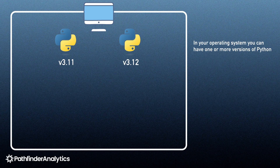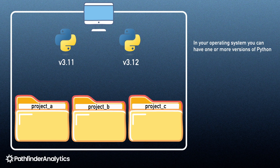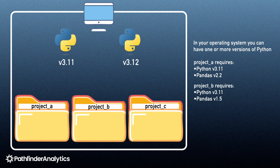You're also working on three projects on your local machine: project A, project B, and project C. Project A needs Python v3.11 and pandas v2.2. Project B needs Python v3.11 and pandas v1.5. Project C needs Python v3.12 and pandas v2.2.